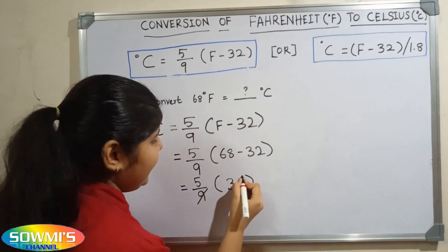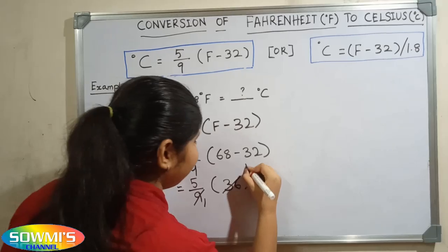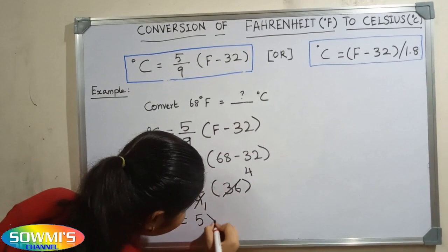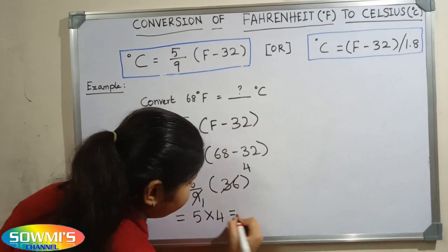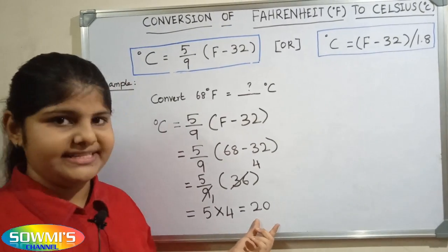9 and 36 gets cancelled. 9 ones are 9, 9 fours are 36. 5 multiply 4 equals 20. So the answer is 20 degree Celsius.